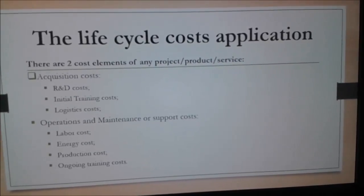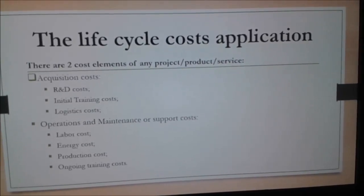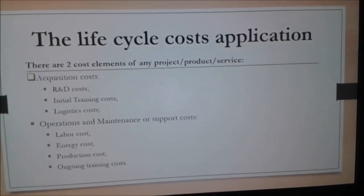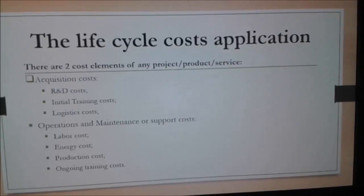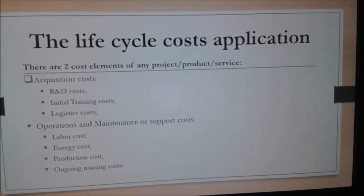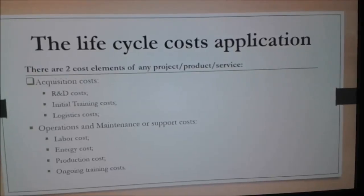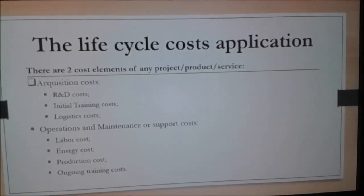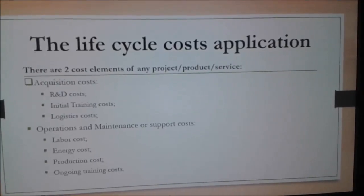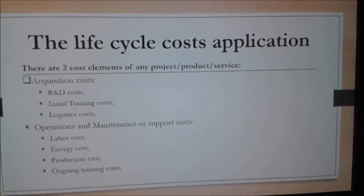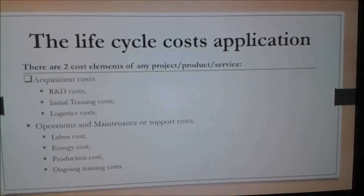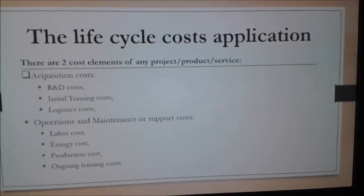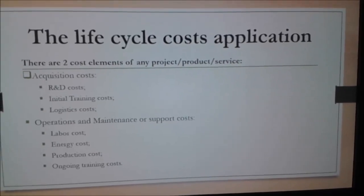Now let's discuss the application of life cycle costs. Any product, project, or service has two cost elements: acquisition costs and operations and maintenance, also called support costs. Acquisition costs may include initial training costs, logistics costs, and if the product or service is developed internally, some research and development costs. Operations and maintenance costs usually include labor, energy, production costs, and ongoing training costs.